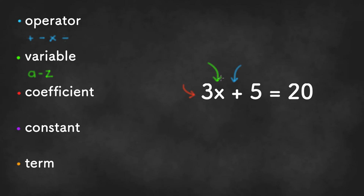Constants are any number that stays fixed in an equation or expression. It'll be a single number by itself. In the example shown here, the constants would be the number 5 and the number 20.